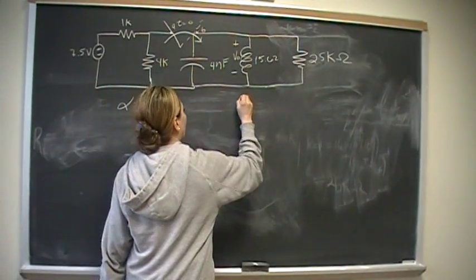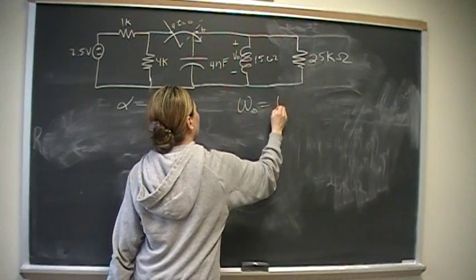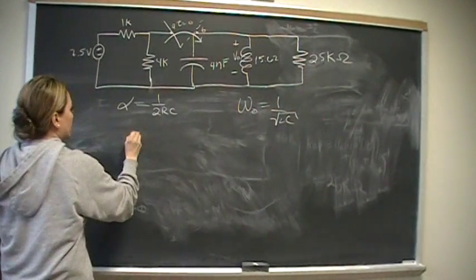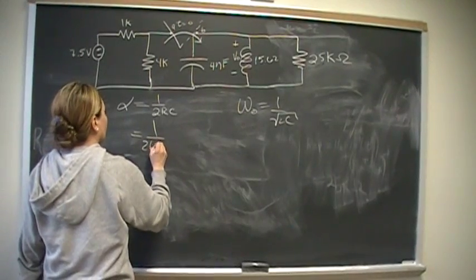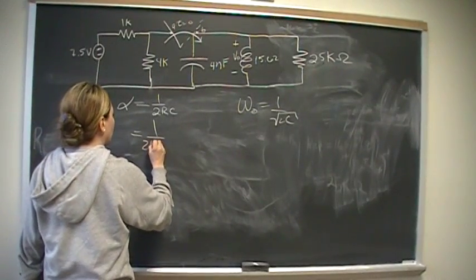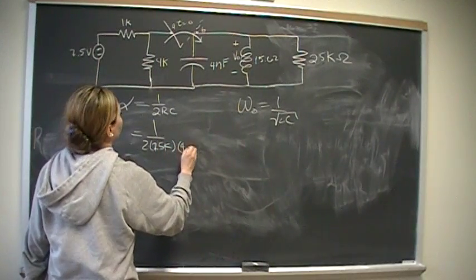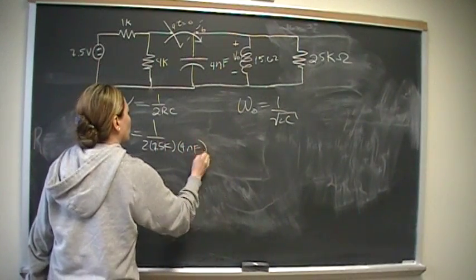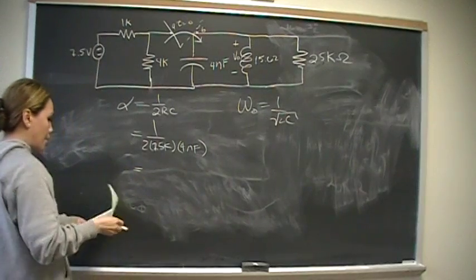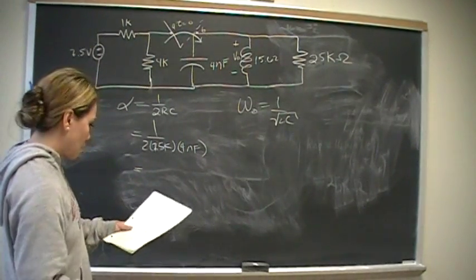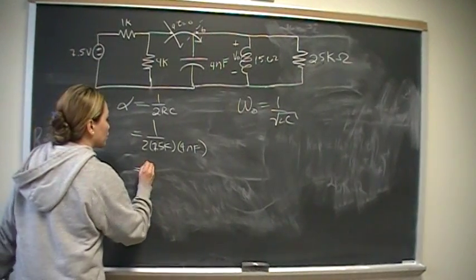we need alpha and omega. Alpha is 1 over 2 RC. Omega naught is 1 over root LC. Just plug the numbers. This is 2 times 25 kilo-ohms times 4 nanofarads. Put that into your calculator, you should come up with 5,000 radians per second.